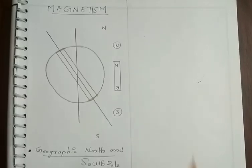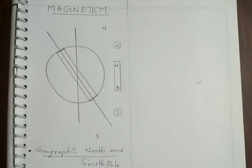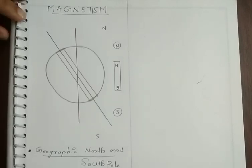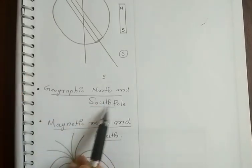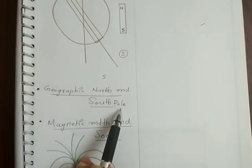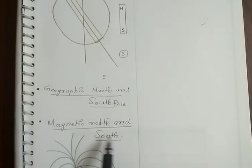Hello students, we are going to talk about the earth's magnetic field and the various magnetic elements. First of all, you have to understand what is the geographic north and south pole of the earth, and what is the magnetic north and south pole of the earth.